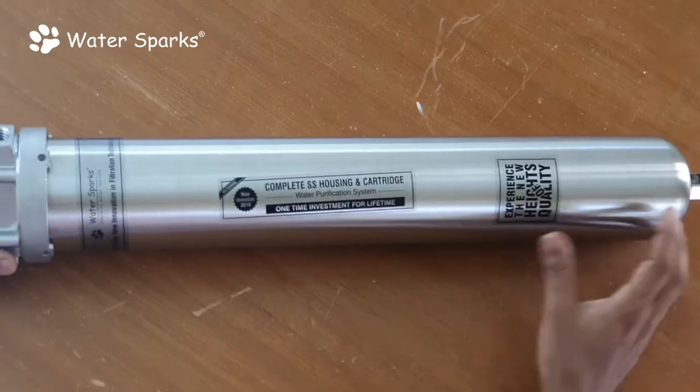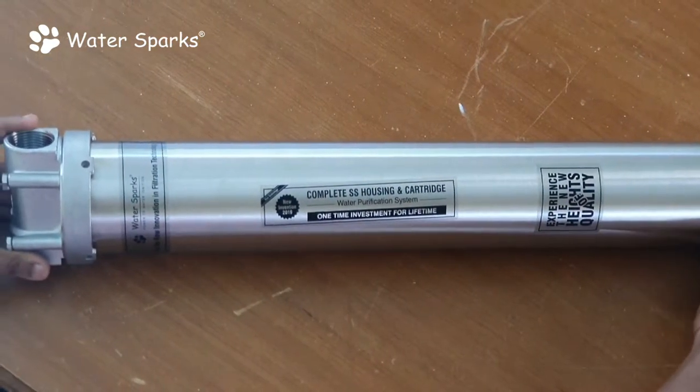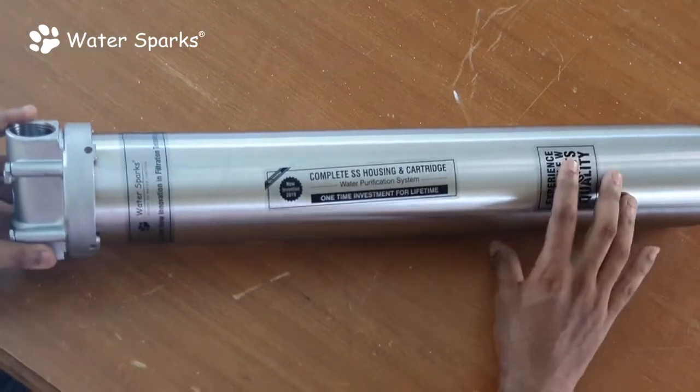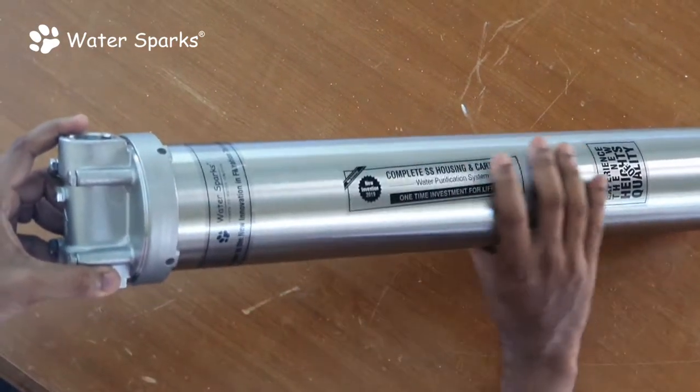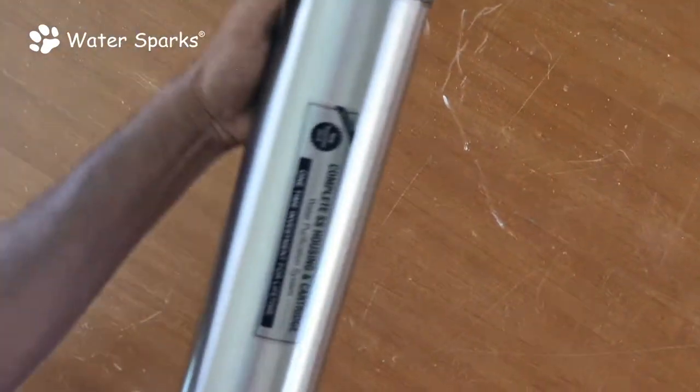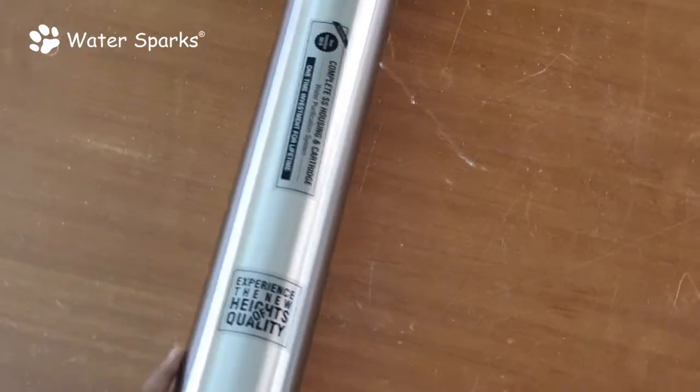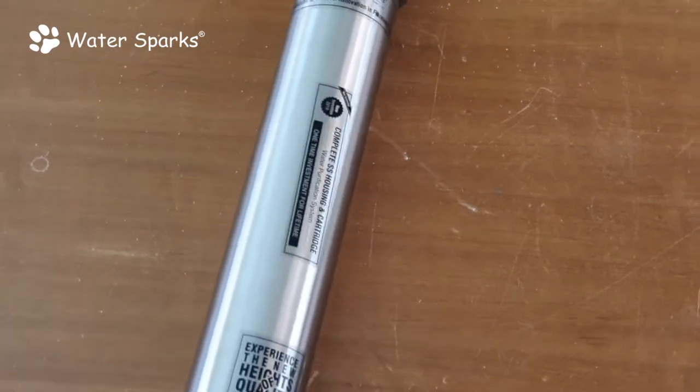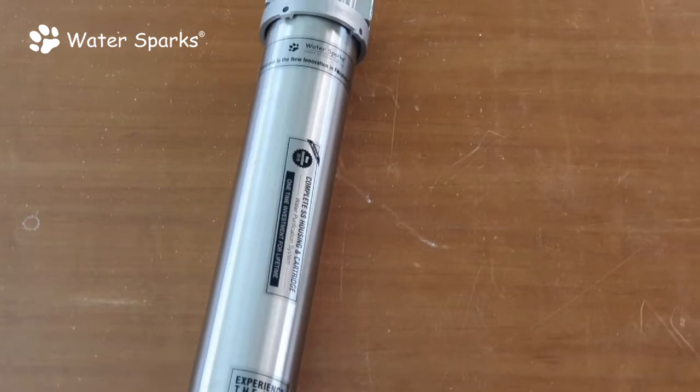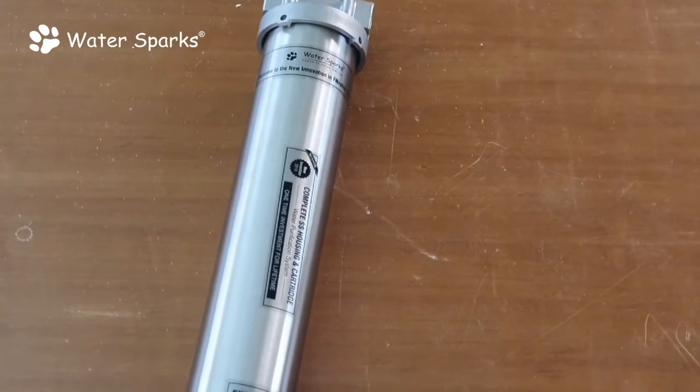Today we're going to see how to unbox and install a whole apartment purifier where you have suspended impurities in the water. This can be used where suspended impurities are high, but cannot be used in water with iron PPM more than 1 PPM.